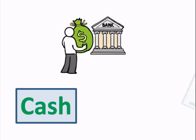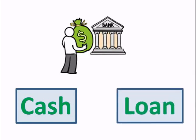The business has an obligation to pay back the bank. In the journal entry, we would debit the account cash and credit the account bank loan payable.